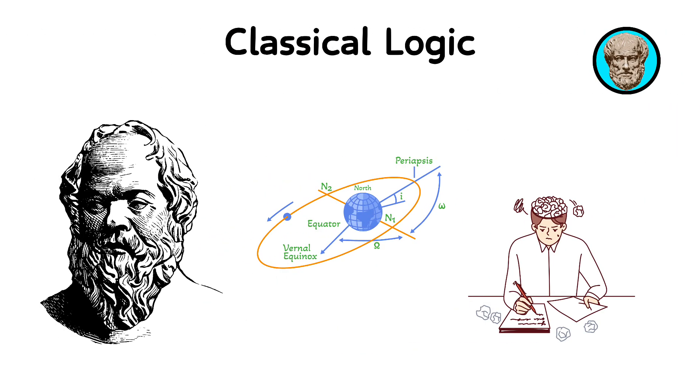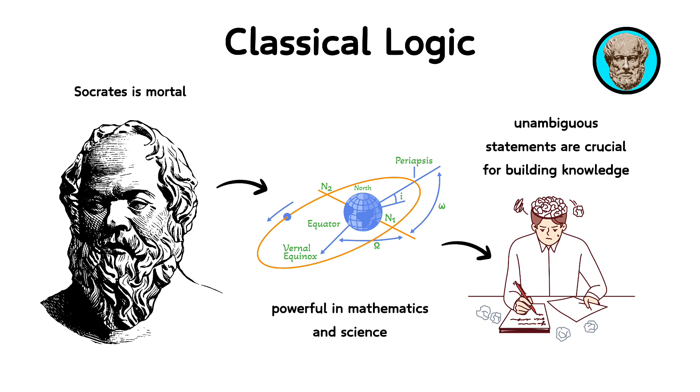The strength of classical logic lies in its ability to provide definitive conclusions given certain premises. For example, if all humans are mortal and Socrates is a human, then it logically follows that Socrates is mortal. This form of logic is particularly powerful in mathematics and science, where clear, unambiguous statements are crucial for building knowledge.